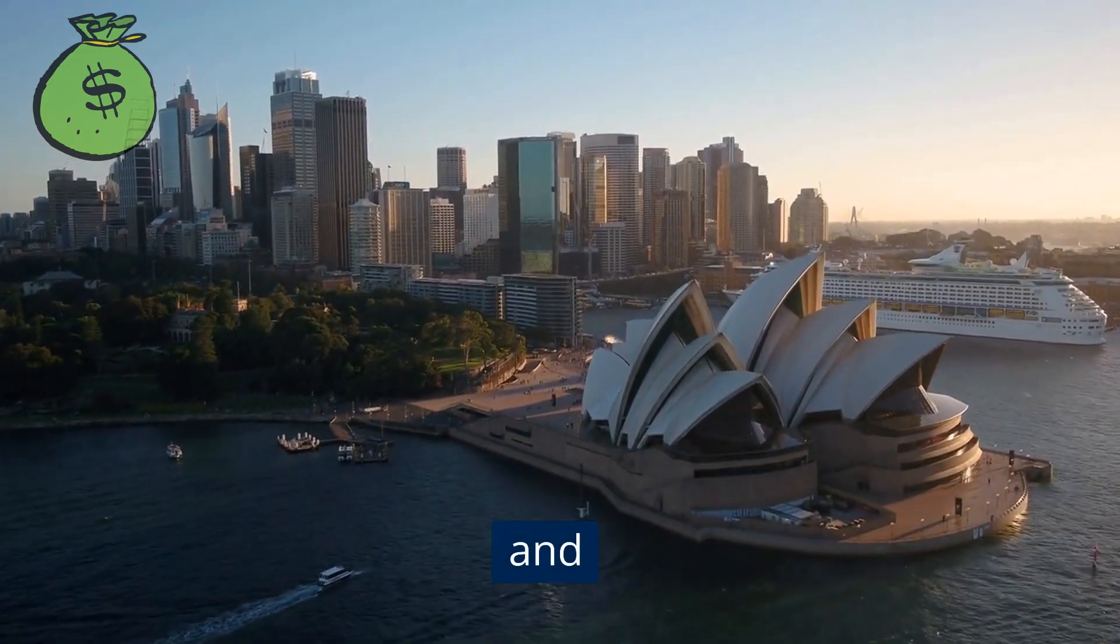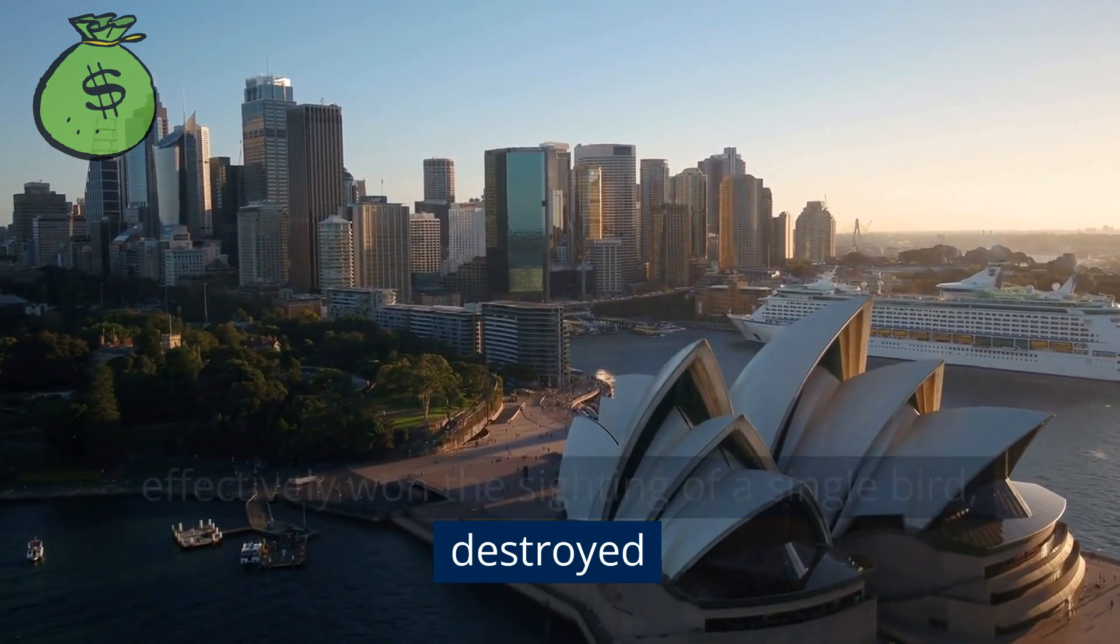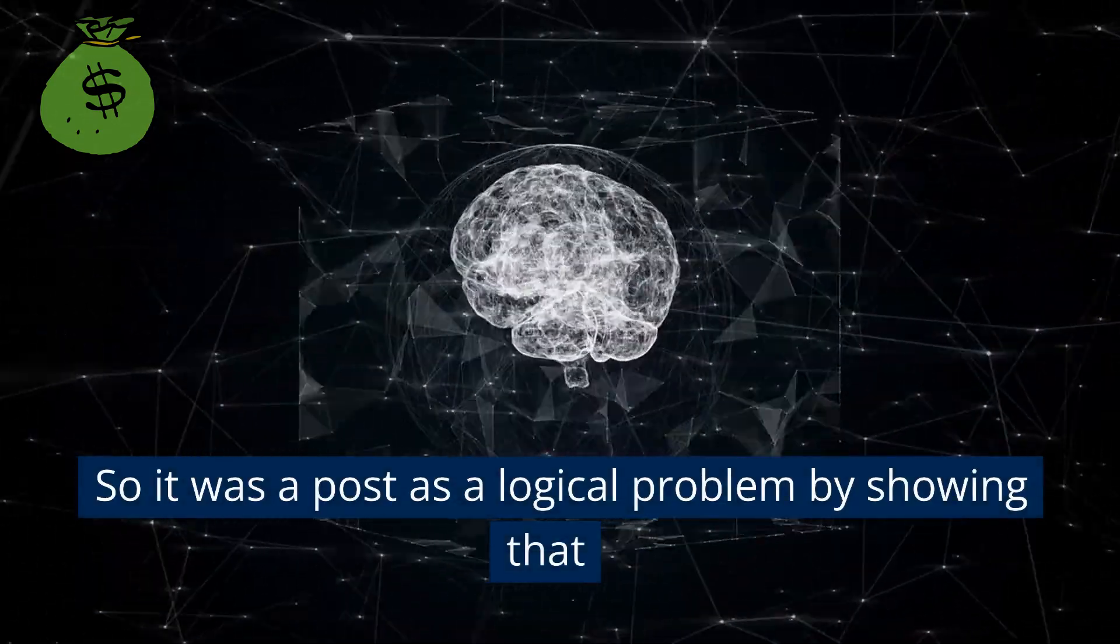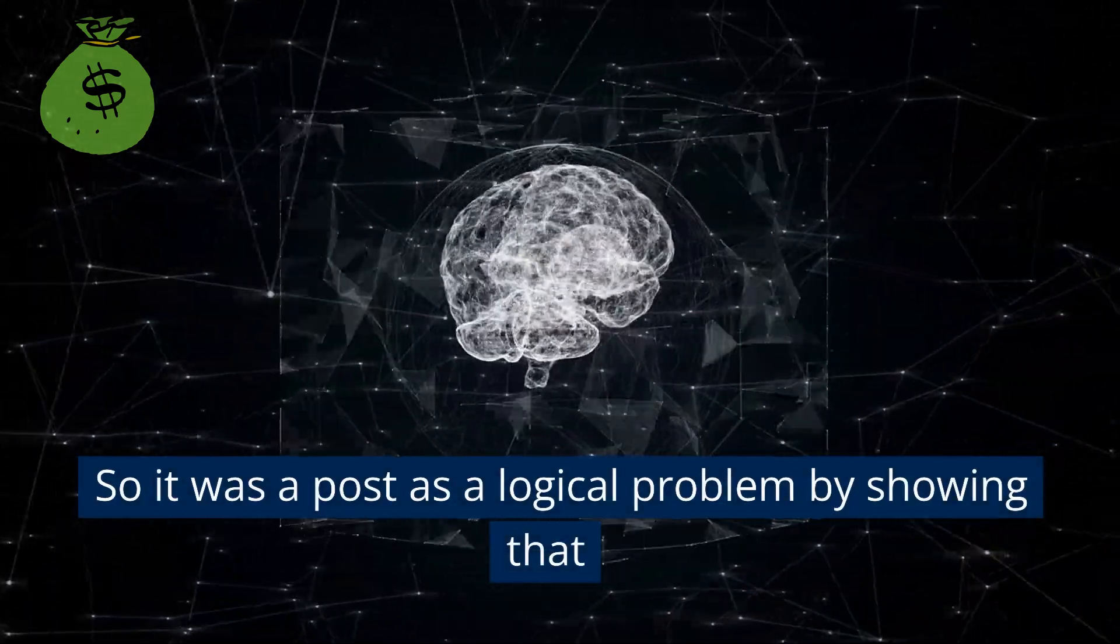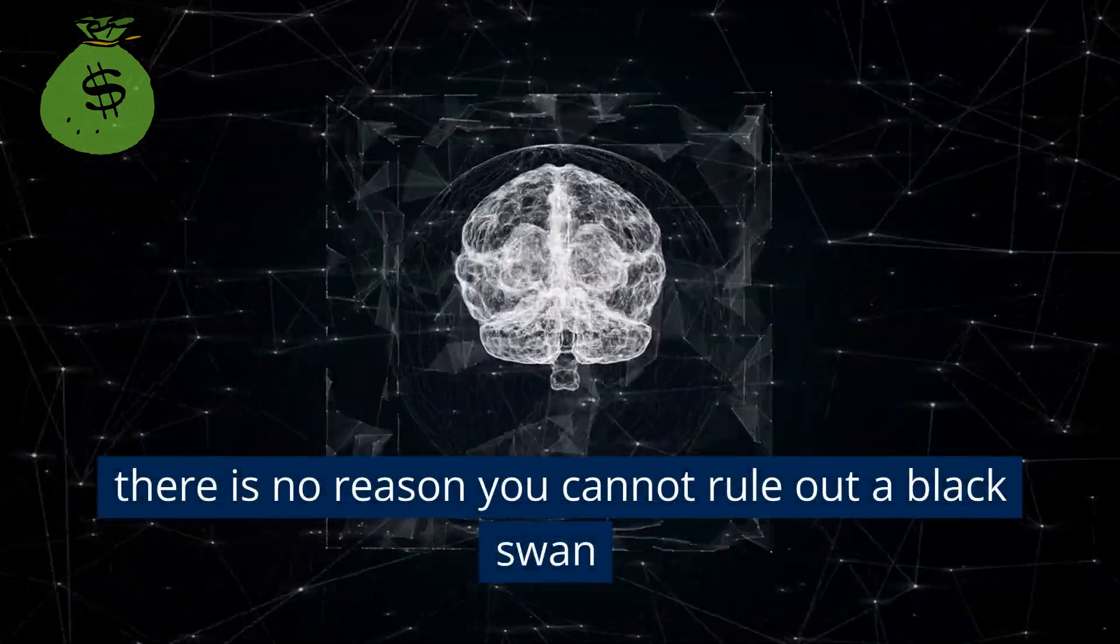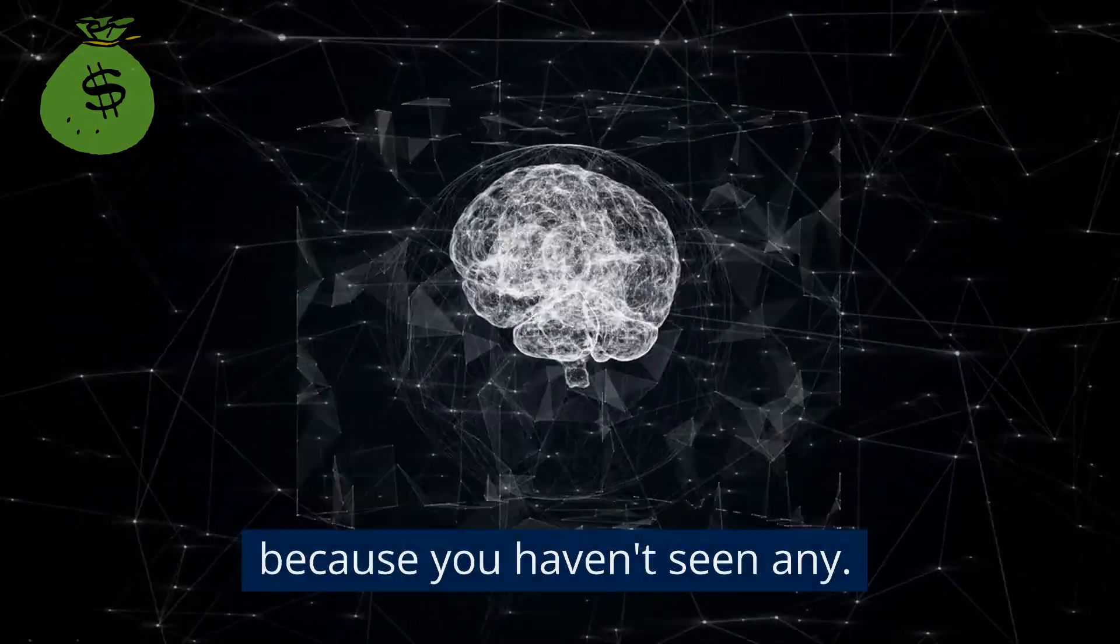Until we saw Australia, and effectively, the sighting of a single bird destroyed millennia of confirmation. So it was posed as a logical problem by showing that you cannot rule out a black swan just because you haven't seen any.